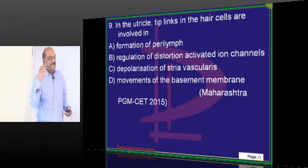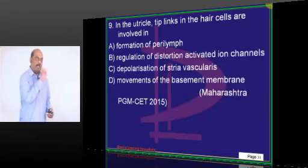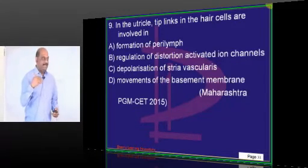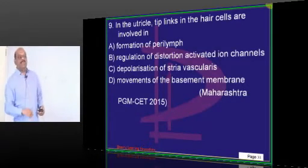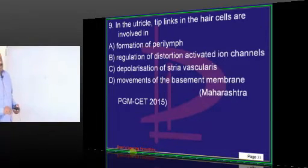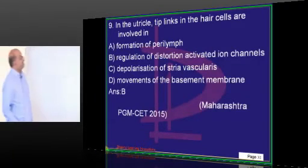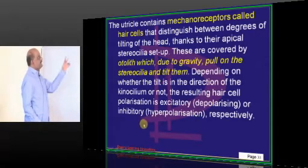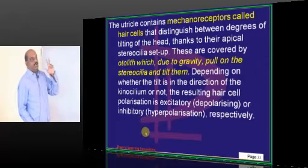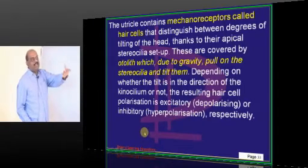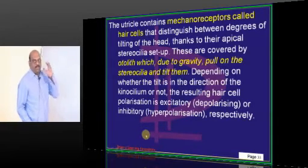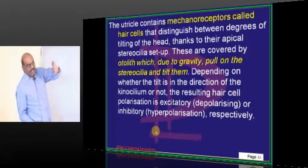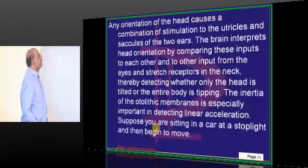All sound has to be ultimately converted into electrical signals through the auditory nerve — just as light falling on the retina converts to electrical conduction. In the utricle, tip-links in the hair cells are involved in altering and activating ion channels. These mechanoreceptor hair cells distinguish the tilt of the head, allowing linear acceleration to be perceived, while semicircular canals perceive angular acceleration.